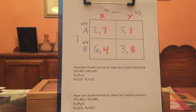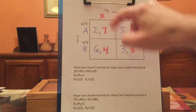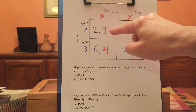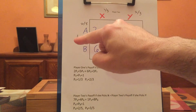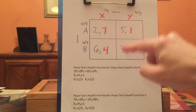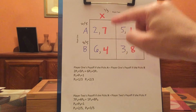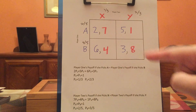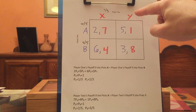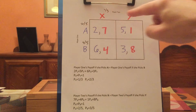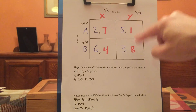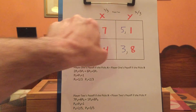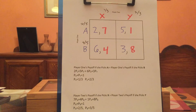Let's verify that these probabilities get player two to be willing to randomize. With these probabilities, if player two plays X, she gets seven times two fifths plus four times three fifths — that's 14 fifths plus 12 fifths, which equals 26 fifths. If she plays Y, she gets one times two fifths plus eight times three fifths — that is also 26 fifths. So these probabilities make player two willing to randomize.